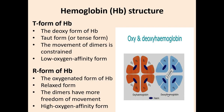In the previous lecture, I told you about the two conformations of hemoglobin: the relaxed state and the tense state. Oxygen has higher affinity for hemoglobin in the relaxed state. The tense state is the predominant conformation of deoxyhemoglobin.